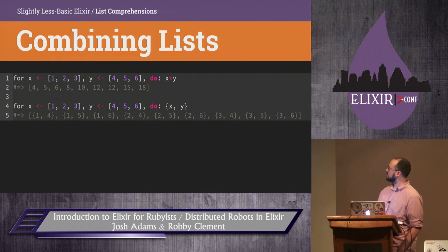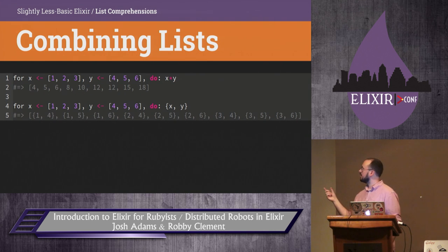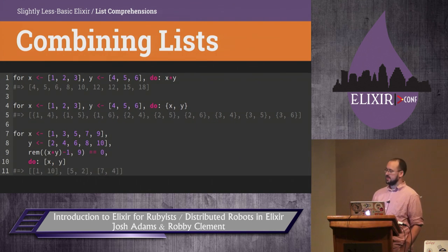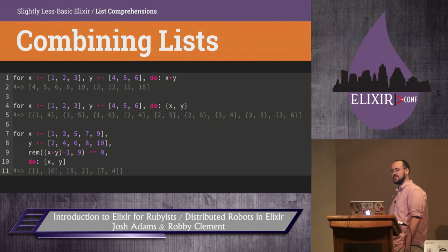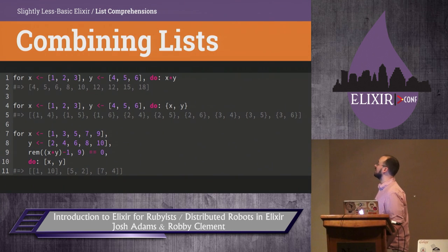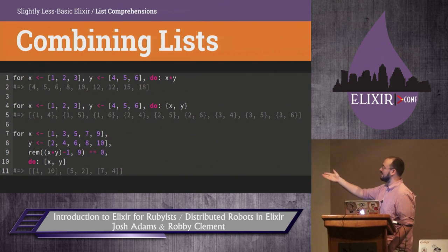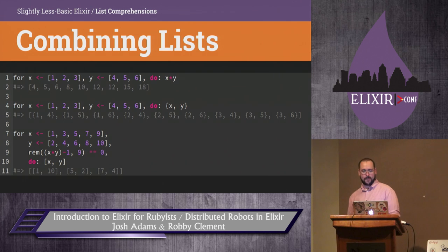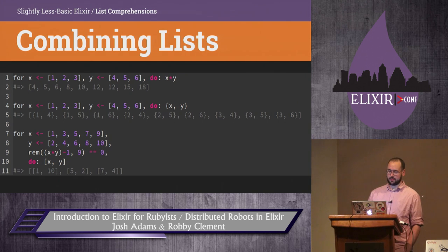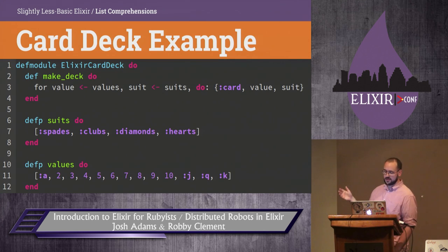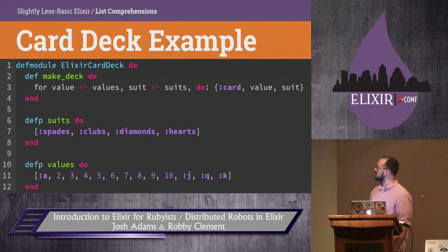Maybe you want to generate a list of tuples showing all the combinations of two lists — that's pretty nice. You can also get fancy: here are all the numbers based on the first five odd numbers and the first five even numbers where the product minus one is divisible by nine. That's a very terse way to write that. Here's a module for building a deck of cards using list comprehensions — very trivial, just list the two things you combine across and you have a list comprehension.